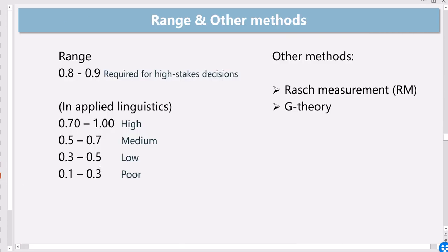Now, in applied linguistics, different ranges have been used and have been referred to. One of the ranges that I often see is this: that anything between 0.7 to 1 is high and between 0.5 to 0.7 is medium and 0.3 to 0.5 is low and anything below that is poor and not acceptable.